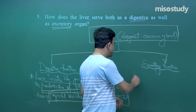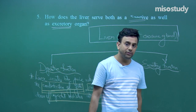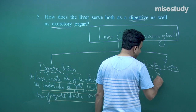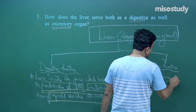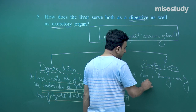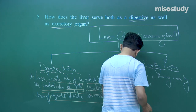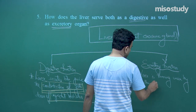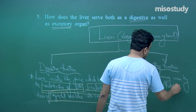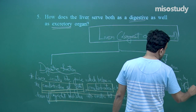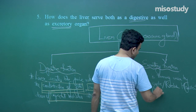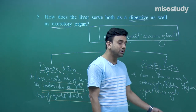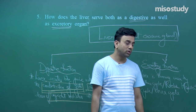When we talk about the excretory function, the liver is the principal organ of excretion after the kidney. The liver forms urea by the ornithine cycle, also called the Krebs-Henseleit cycle or the urea cycle. There is deamination of the amino group in the liver and urea gets formed.